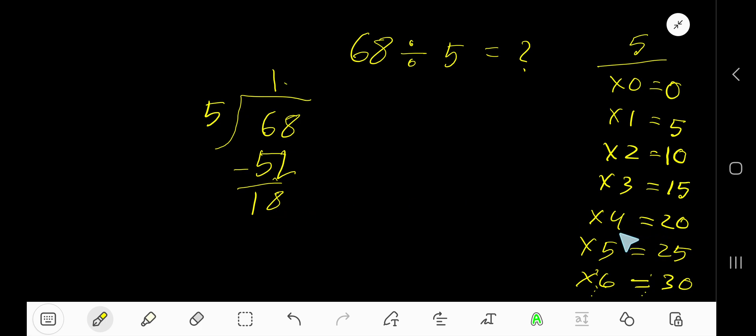So 5 goes into 18 how many times? 4 times is 20 which is greater, so 3 times. 3 times 5 is 15. Subtract 3. So our answer is 13 remainder 3.